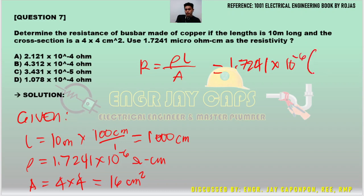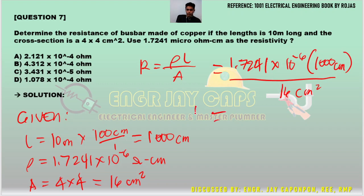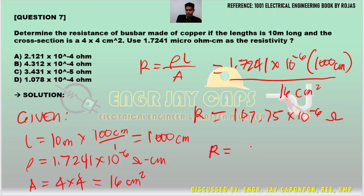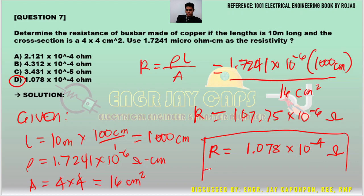Plugging in all values: R = 1.724 times 10 to the negative 6 ohm-cm, times 1000 cm, divided by 16 cm squared. The answer is 1.0775 times 10 to the negative 4 ohms, or approximately 107.75 times 10 to the negative 6 ohms. The answer is letter D. Always use your scientific calculator to solve this.